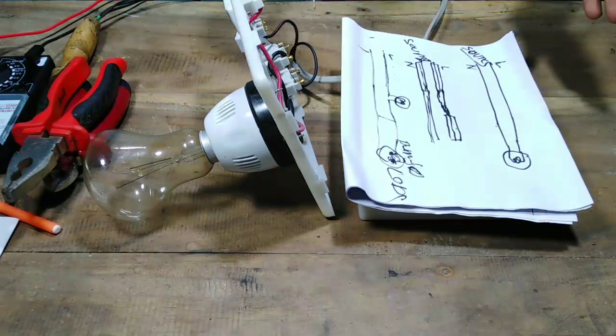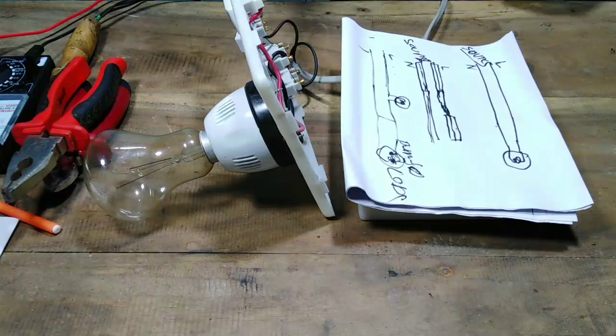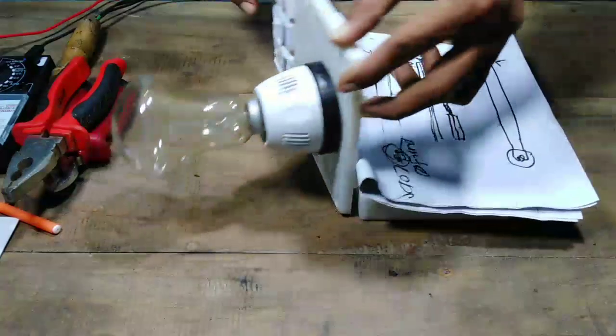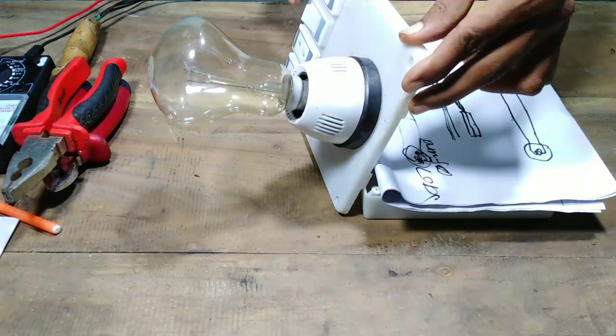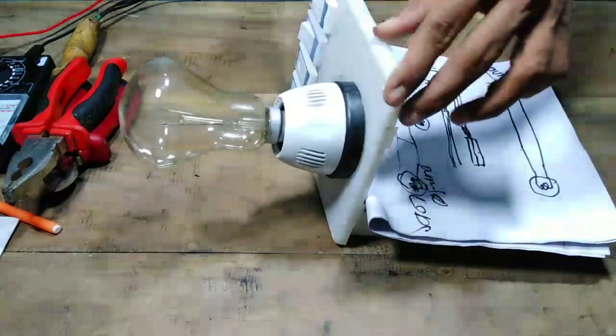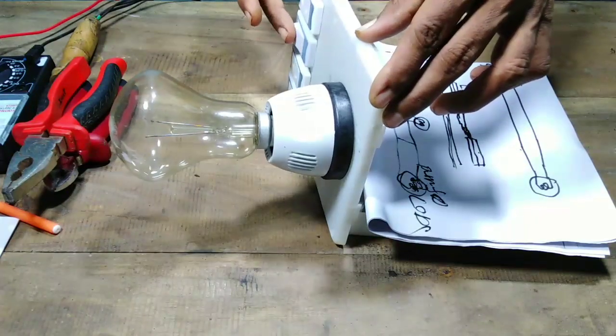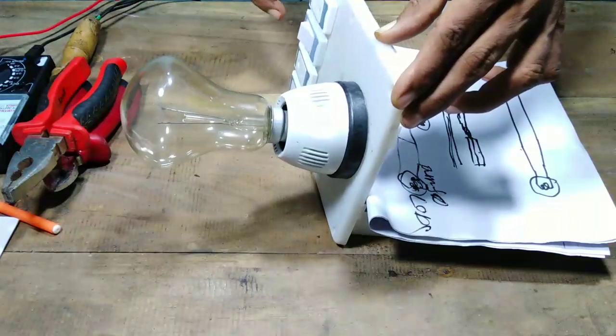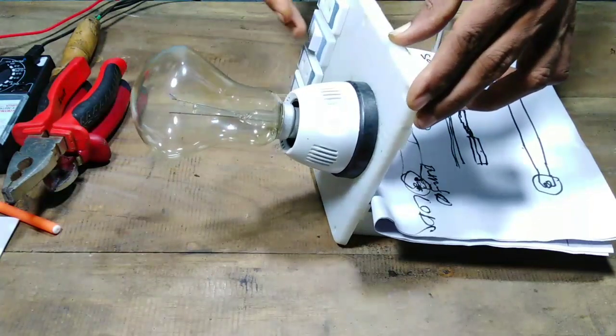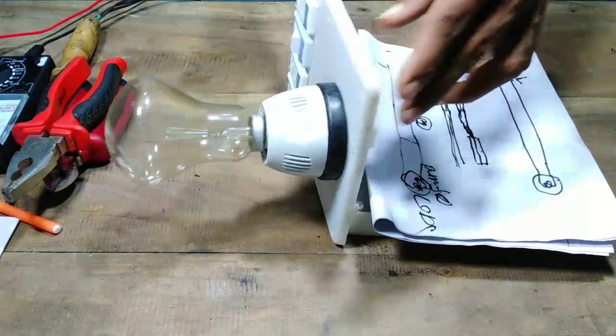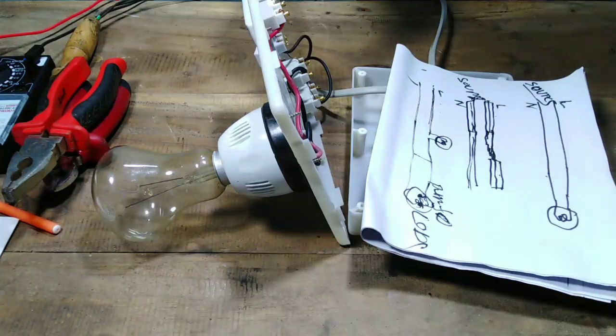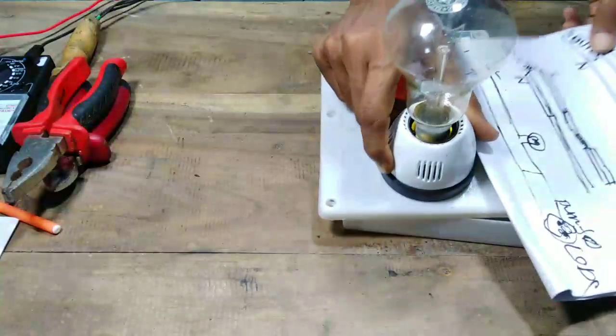Using a neon tester, we can check the circuit. The neon tester shows if there's power in the line. If the line is connected properly, the tester will light up. If there's a disconnection, the tester won't light, so you can investigate the circuit.